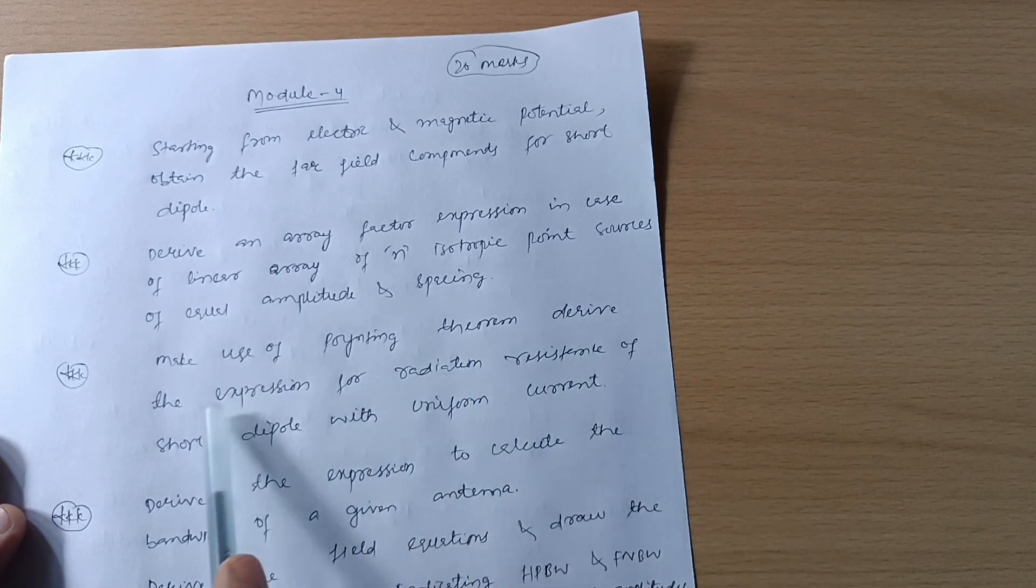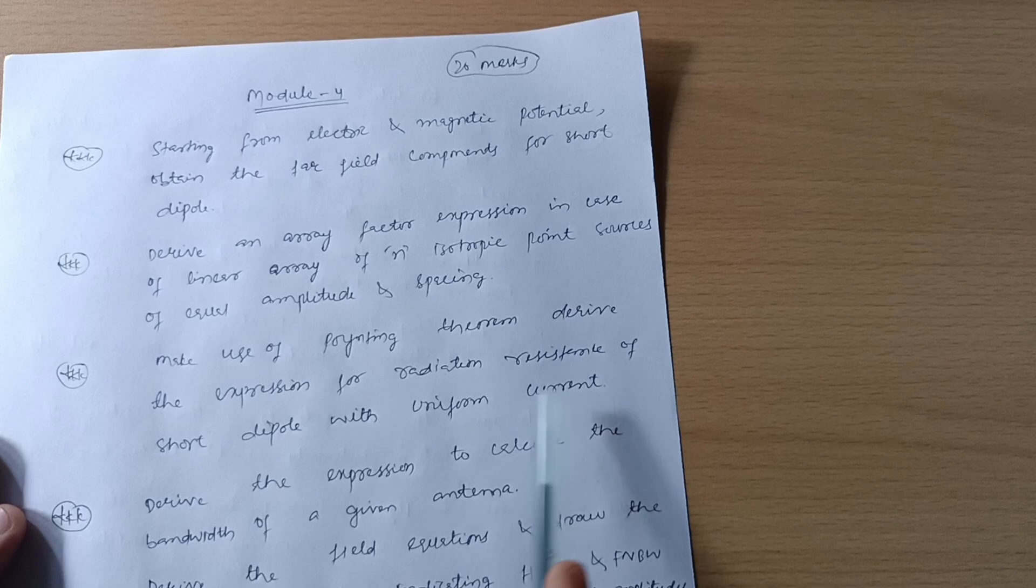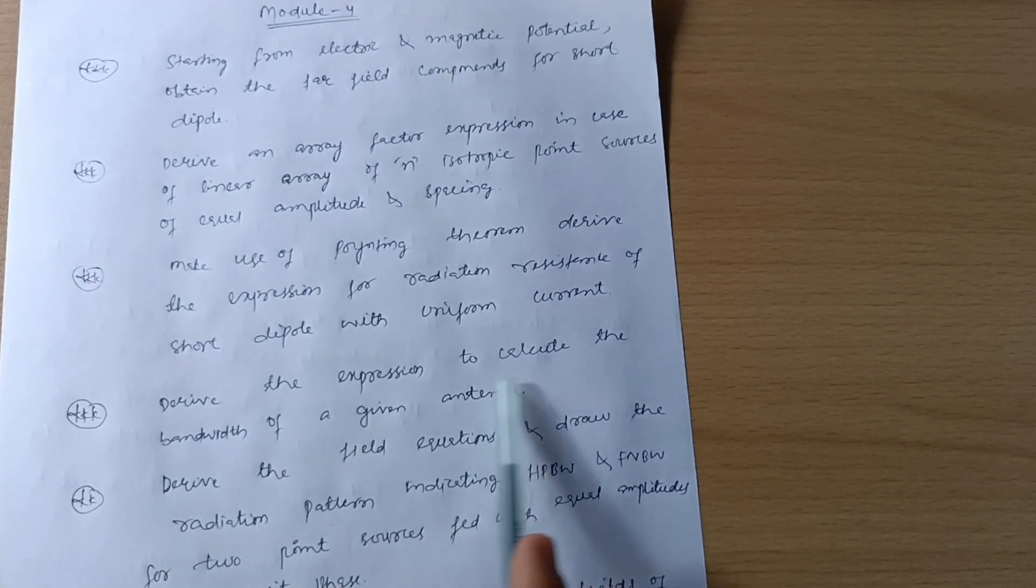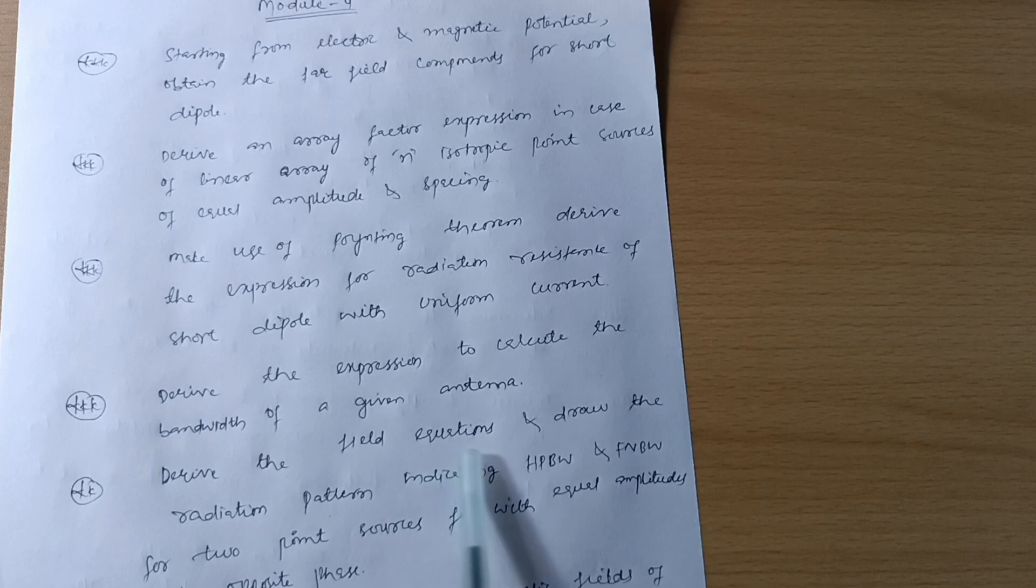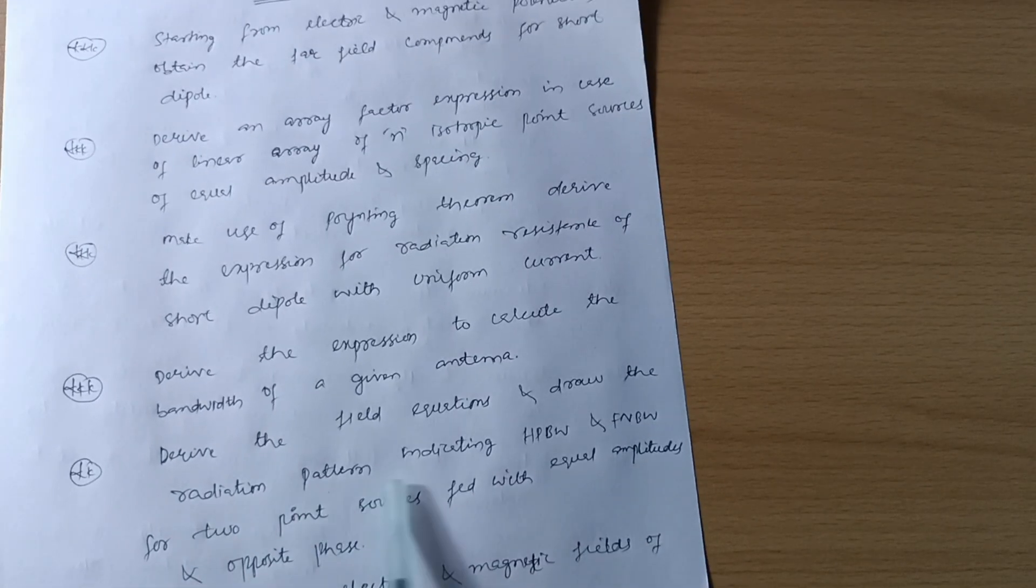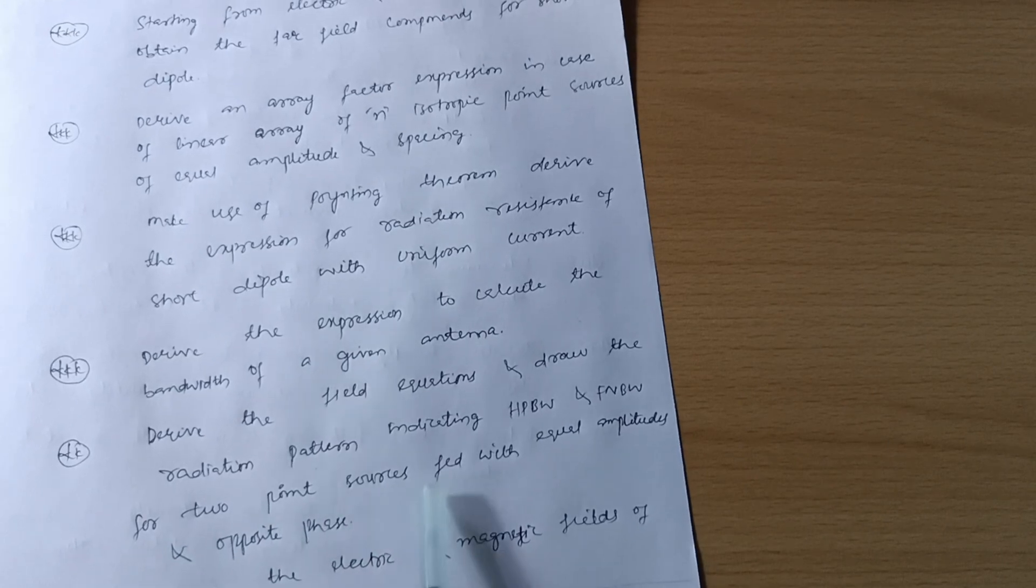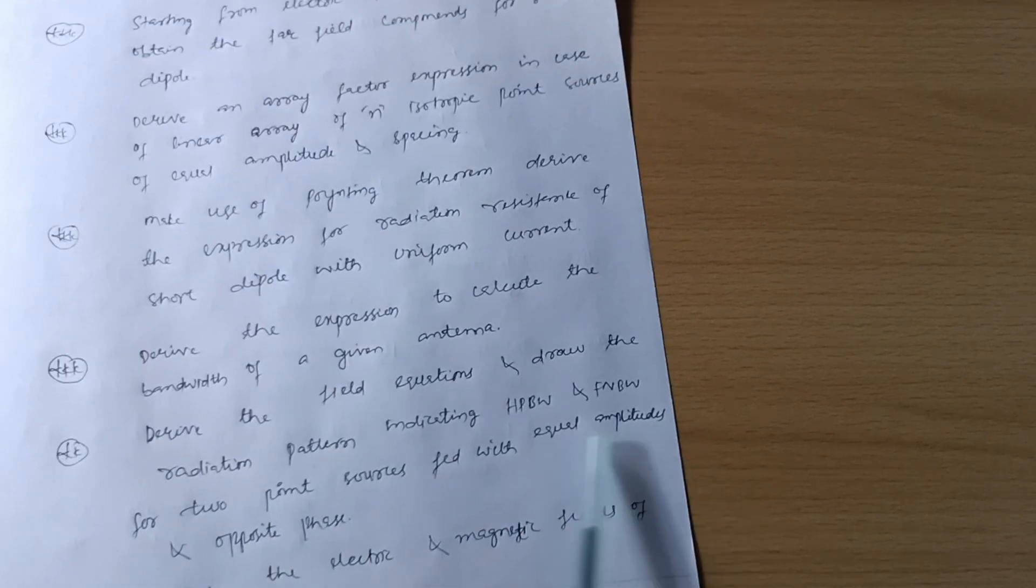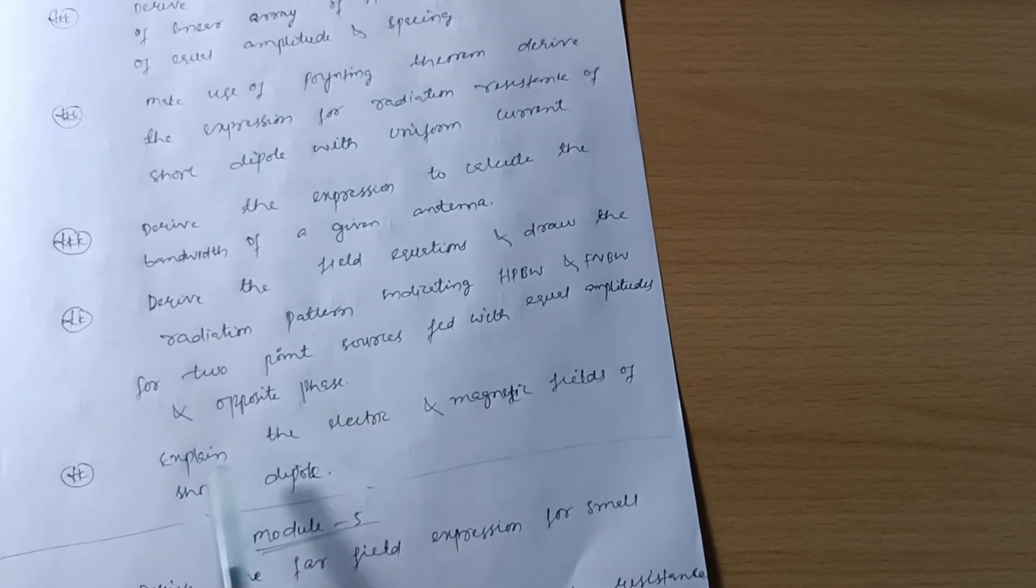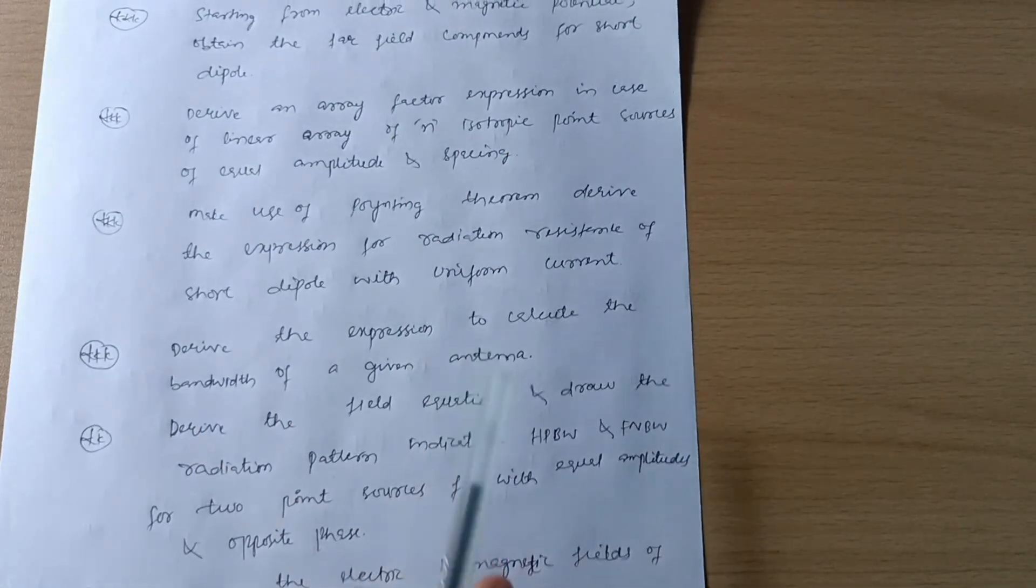Make use of Poynting theorem, derive the expression for radiation resistance of short dipole with uniform current. Next we have derive the expression to calculate the bandwidth of a given antenna. And derive the field equations and draw the radiation pattern indicating HPBW and FNBW for two point sources fed with equal amplitude and opposite phase, or sometimes equal amplitude and equal phase. Next is explain the electric and magnetic fields of short dipole. By covering this much, you can easily get 20 marks from Model 4. So don't leave any question.